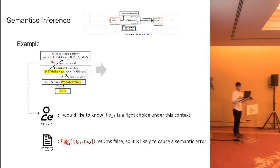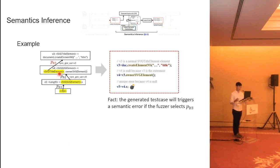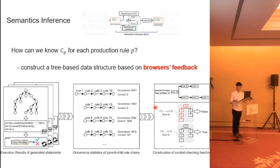this function will return false, which means that it is likely to cause a semantic error. And so the fuzzer will know, oh, I should choose another production rule instead of the Pb3. That's how the context-checking function works. The fact is that if the fuzzer really selects the Pb3 in this context, the generated test case will trigger a semantic error. So it will prevent our fuzzer from exploring the browser's state.